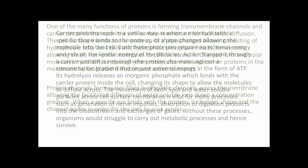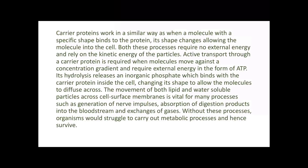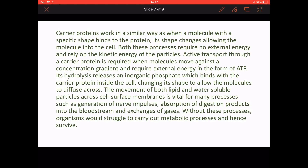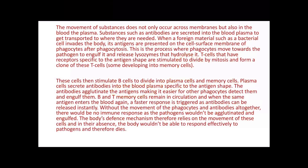The next paragraph is around the right length. However, there isn't much of an uplift to A-level, and I question whether a good GCSE student could have written it. It also lacks detail. It says the movement of both lipid and water soluble particles across cell surface membranes is vital for many processes such as generation of nerve impulses, absorption of digestion products in the bloodstream, and exchange of gases. It would be much better to go into more detail and talk about what would happen if, for instance, we didn't absorb glucose, or if ions weren't able to cross the cell membrane and generate nerve impulses.